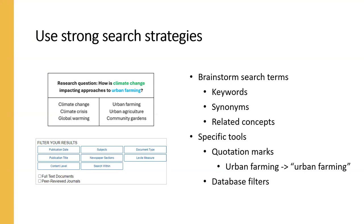You can write these down by hand or put them in your phone or in a document — whatever works for your process. Using strong keywords is very important, but there are a couple of other specific tools to make your searches more targeted. Remember to use quotation marks around multiple-word phrases to make sure the database finds those words right next to each other in the correct order. And don't forget about database filters such as date and publication type, which make your search results more targeted and manageable.